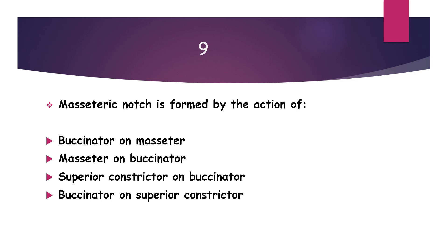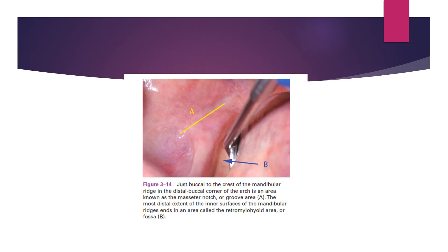Next question: the masseter notch is formed by the action of which muscles? Options are buccinator on masseter, masseter on buccinator, superior constrictor on buccinator, and buccinator on superior constrictor.